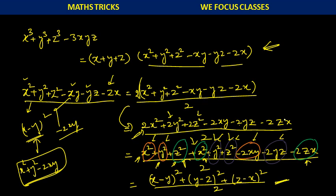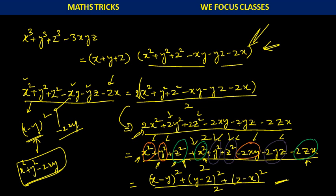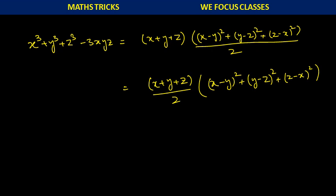Now I replace this back. So x cube plus y cube plus z cube minus 3xyz is nothing but x plus y plus z into x square plus y square plus z square minus xy minus yz minus zx. Replacing that second factor, this becomes x plus y plus z divided by 2, into (x minus y) all square plus (y minus z) all square plus (z minus x) all square. So this is the expression we need to learn, and once we learn it, solving the problem becomes very easy.